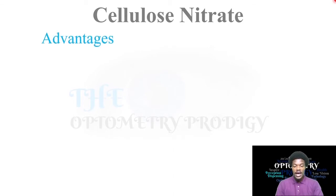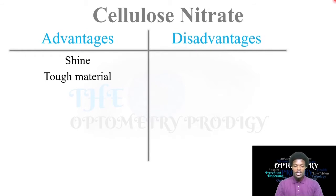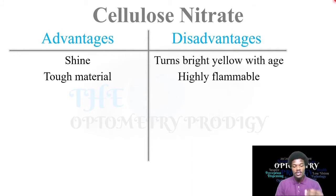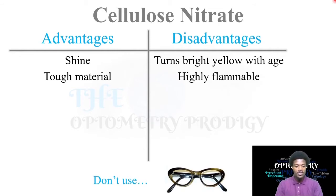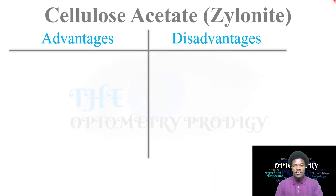Let's look first at cellulose nitrate. The advantages are that it has a shine and is a tough material. However, the disadvantages are that it will turn yellow with age and is highly flammable. This material is not used much anymore — it may possibly still be used in some third world countries, but because of its high flammability, most countries have prohibited its use in frame material.